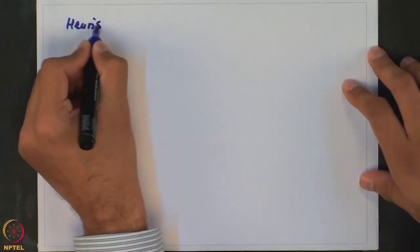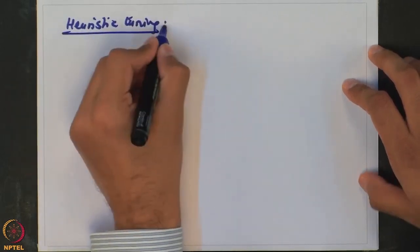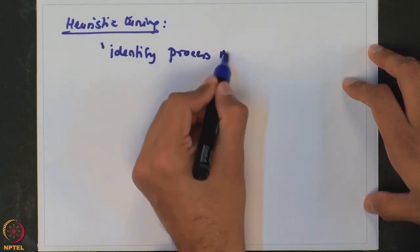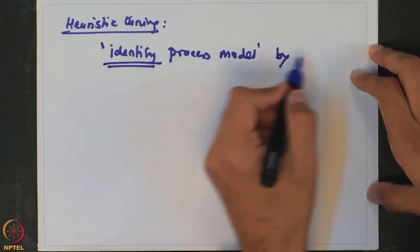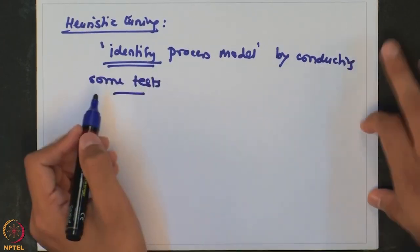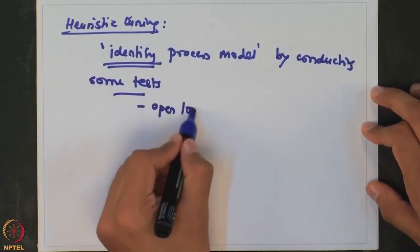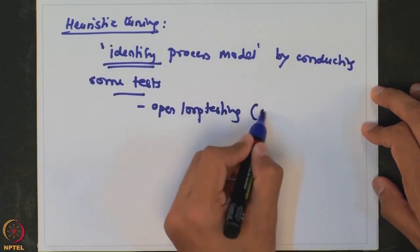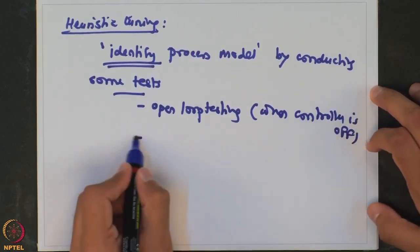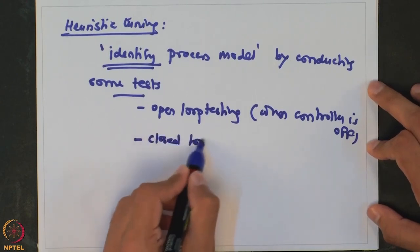Whether you use a closed loop or open loop tuning method, the whole idea is to identify the underlying process model. In heuristic tuning, you identify the process model by conducting tests. If done in open loop it is known as open loop testing when the controller is off, or if the controller is on it is known as closed loop testing.